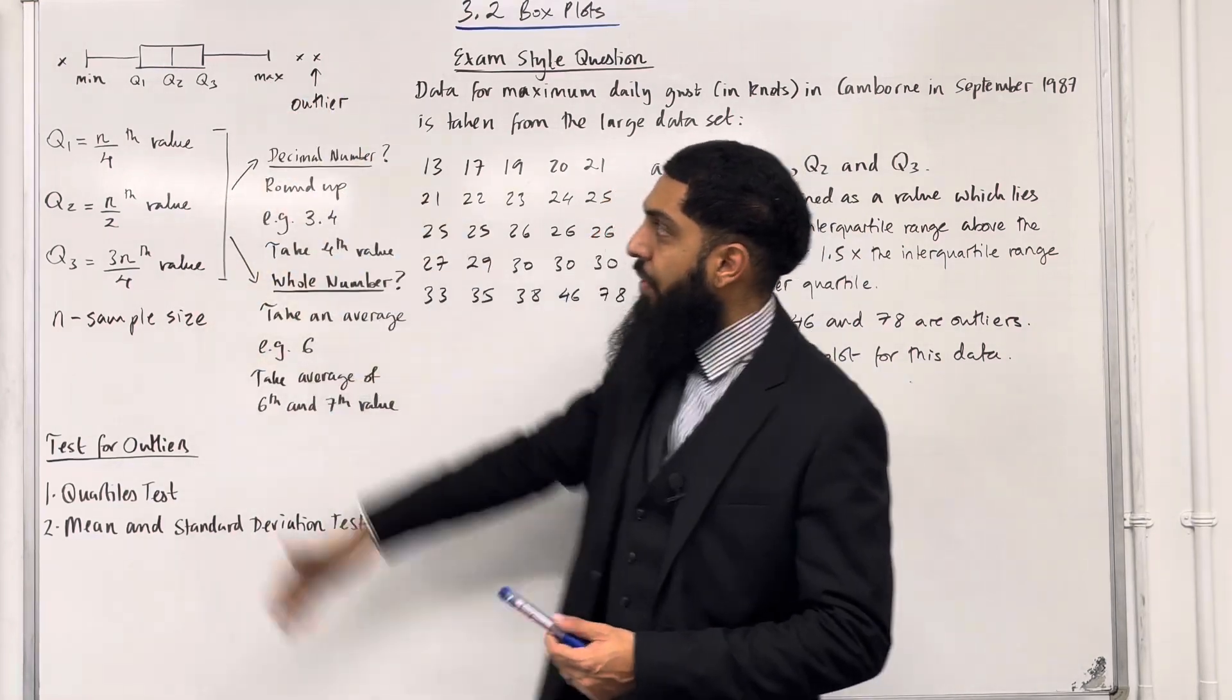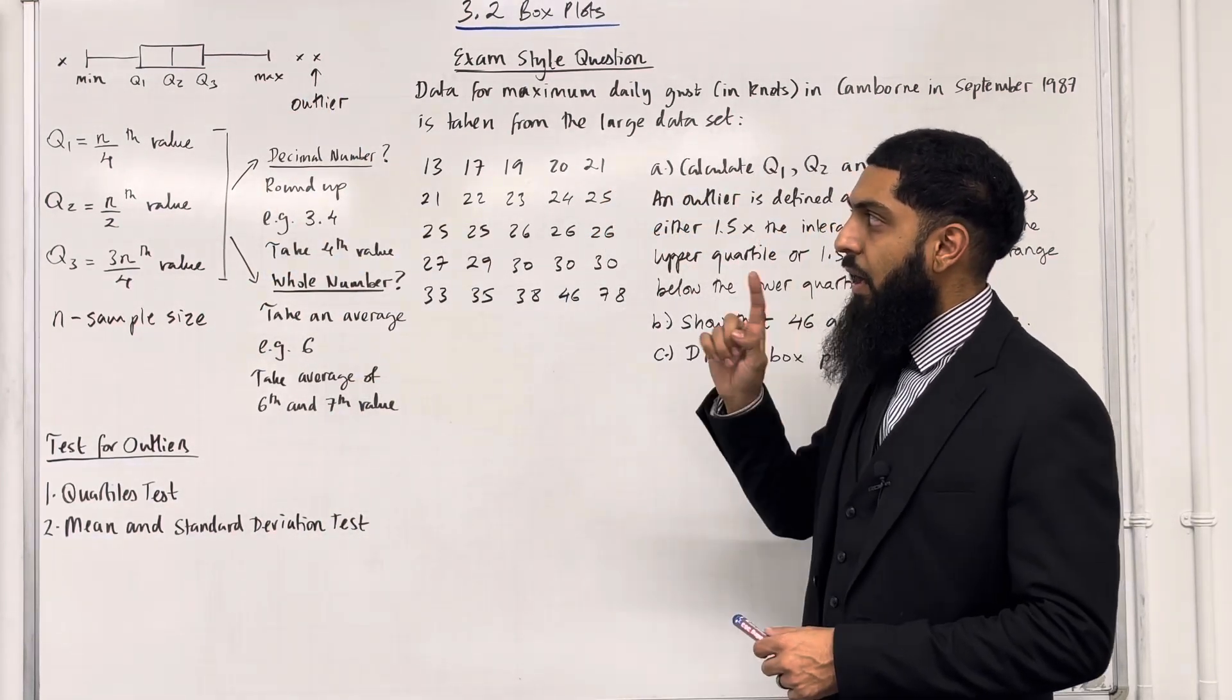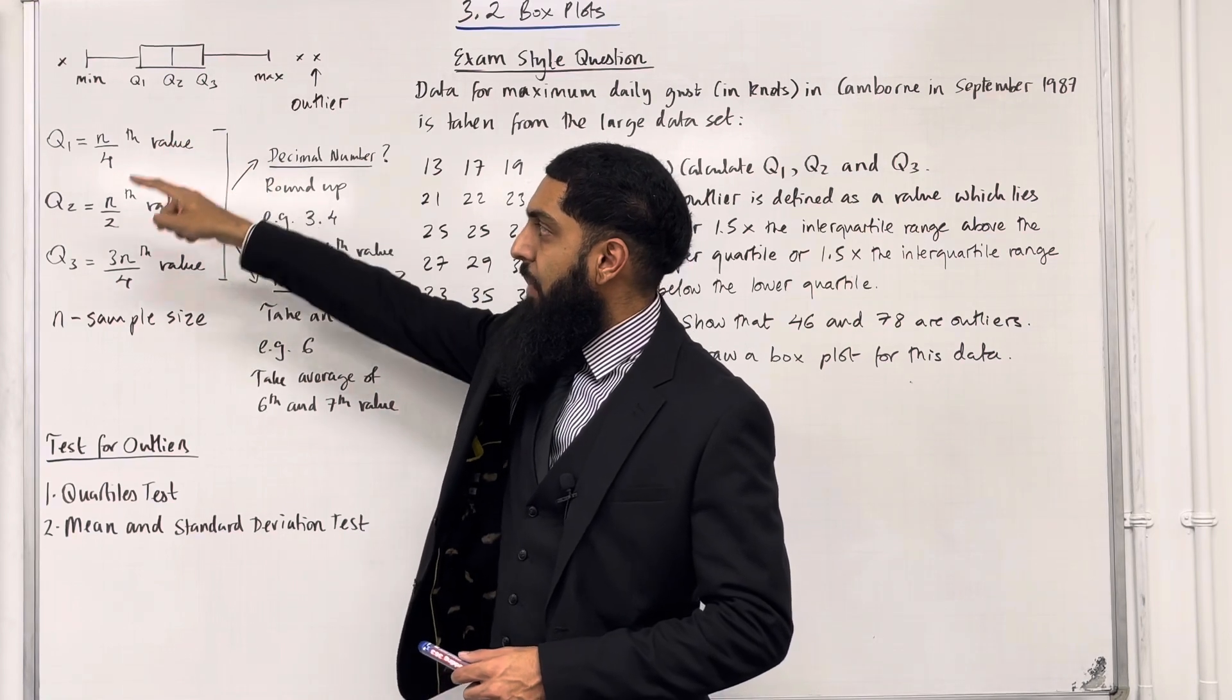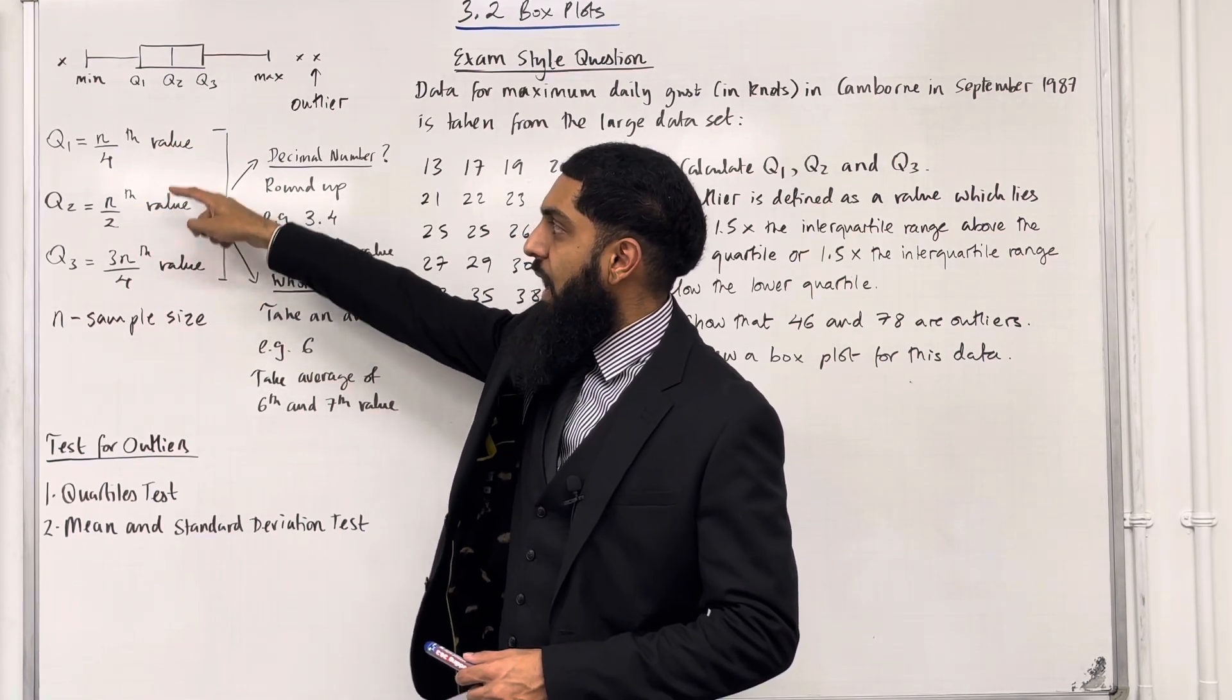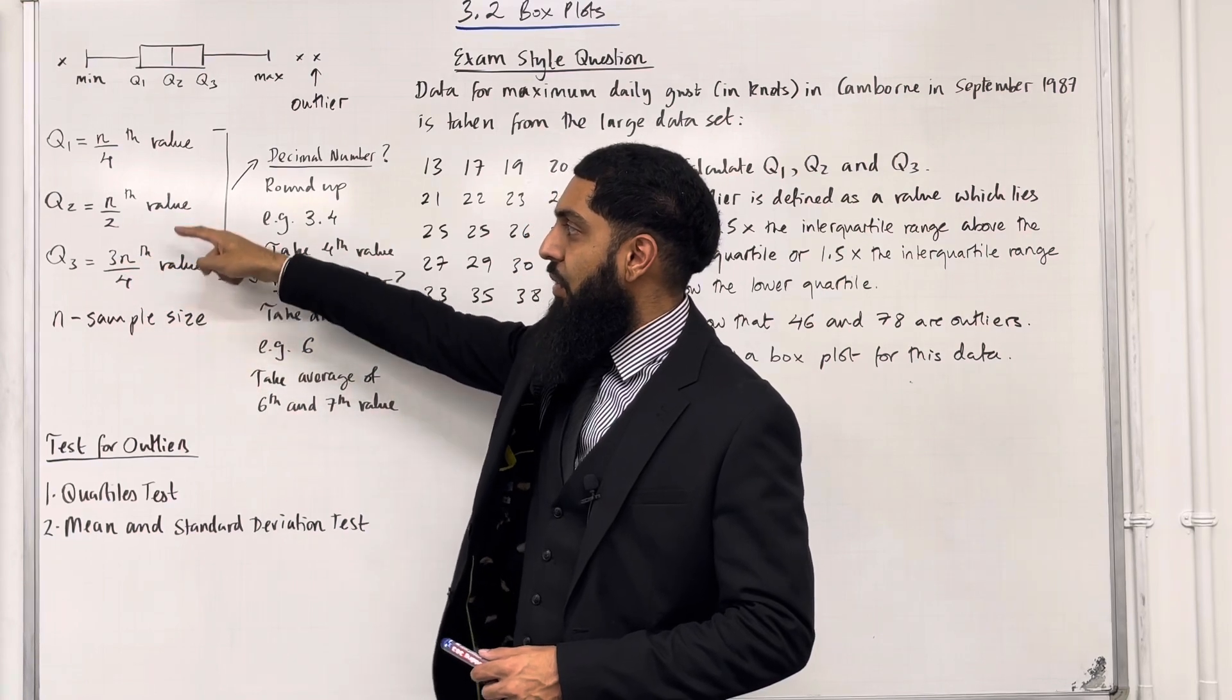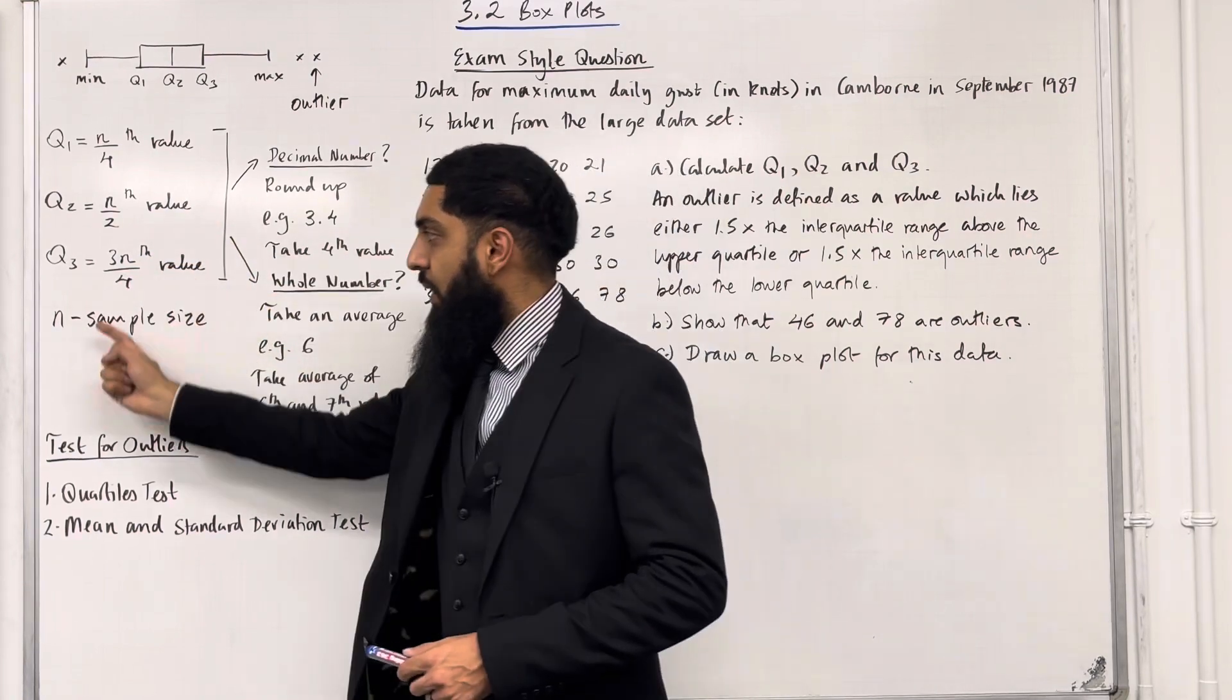The lower quartile Q1 is calculated using n over 4. The median Q2 is calculated using n over 2. And the upper quartile Q3 is calculated using 3n over 4, where n is the sample size.